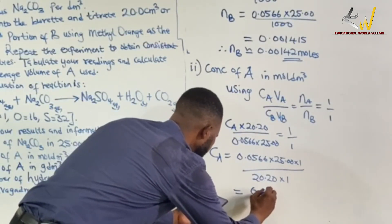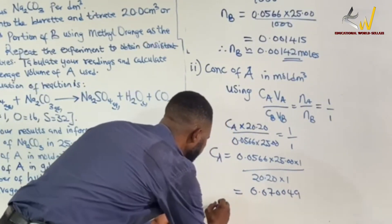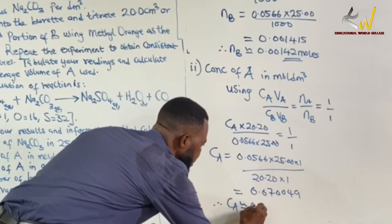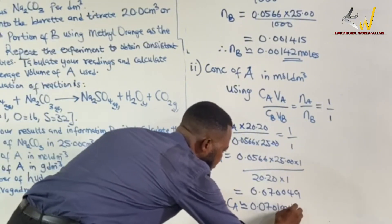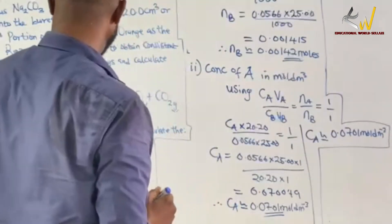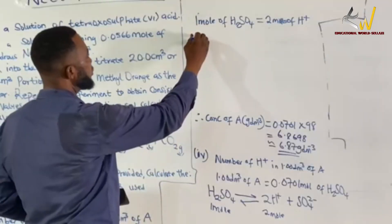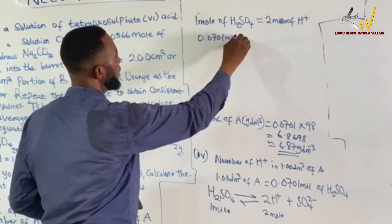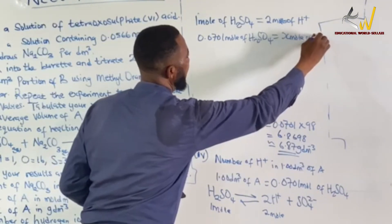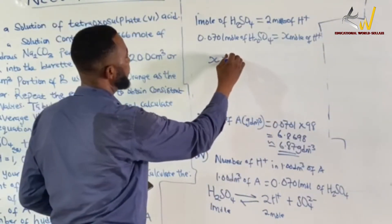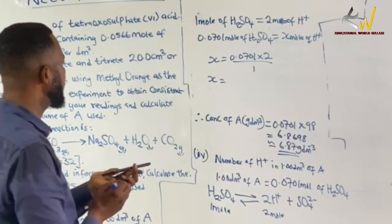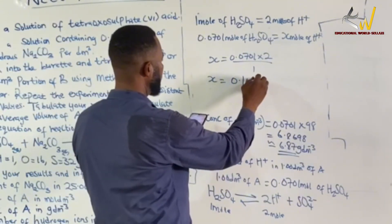Therefore C_A = (C_B × V_B × n_A) / (V_A × n_B) = (0.05 × 25.00 × 1) / (20.20 × 1) = 0.00125/0.02020 = 0.0619 mol/dm³. Actually working it through: C_A = 0.05 × 25.00 / (1000) × (1000/20.20) = 0.0619 mol/dm³. So the concentration of acid is approximately 0.0619 mol/dm³.